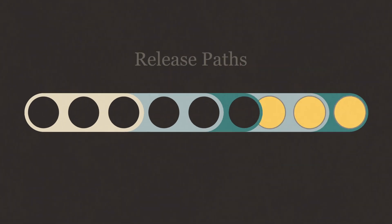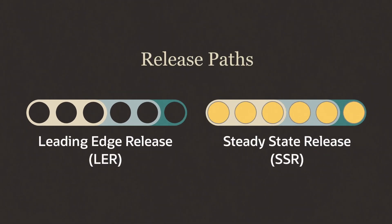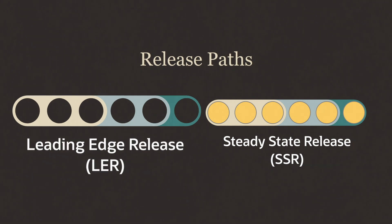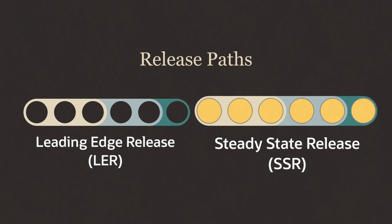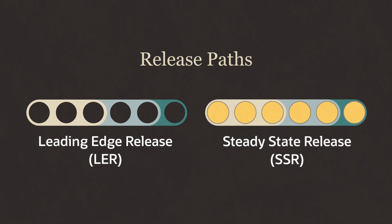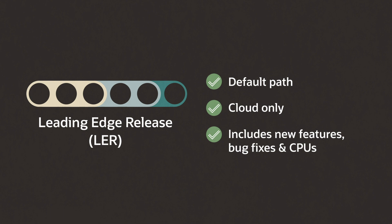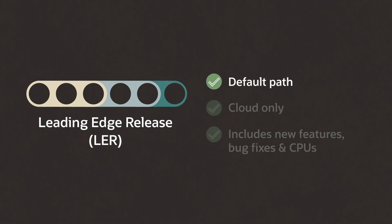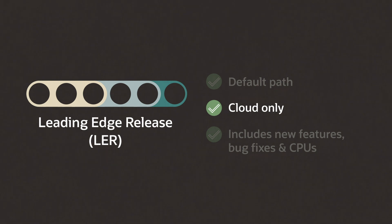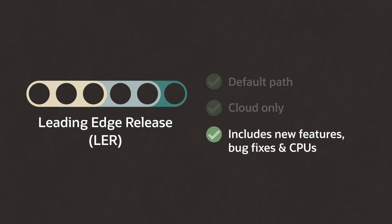We're offering two release paths for Primavera P6 and Unifier in the OCI cloud. The two paths are LER for leading edge release and SSR for steady state release. The leading edge release is the default path. This path is a cloud-only release, so it's not available for on-premise installations. LER includes new features, application bug fixes, and Oracle critical patch updates.